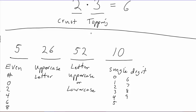When choosing a password, no choice at any stage impacts a choice at any other stage. For example, it doesn't matter what even digit I choose for the first position — that doesn't influence which uppercase letter I have to choose, or which digit I choose in the very last place. All these decisions made at each step are independent; they don't have any influence over a decision at any other step. So to determine the total number of possibilities, I can simply multiply all these numbers together.